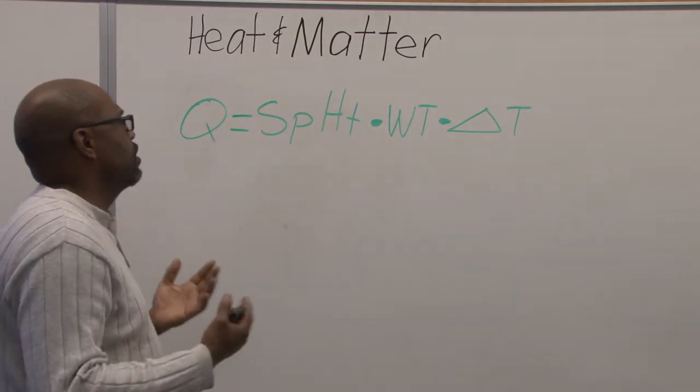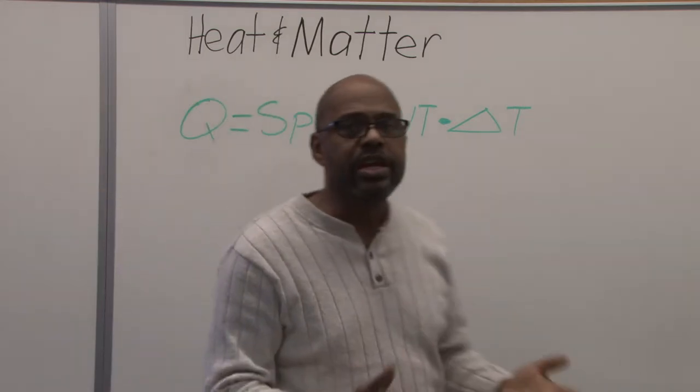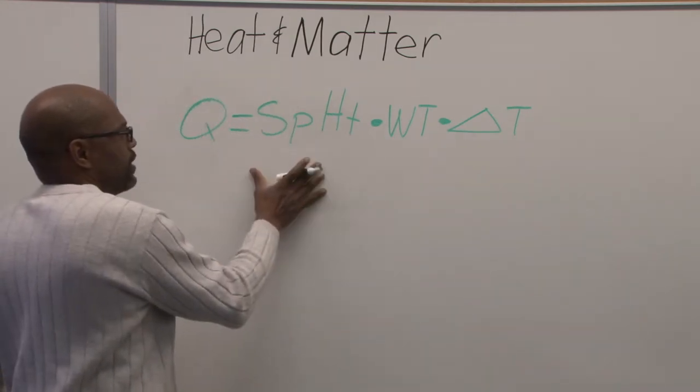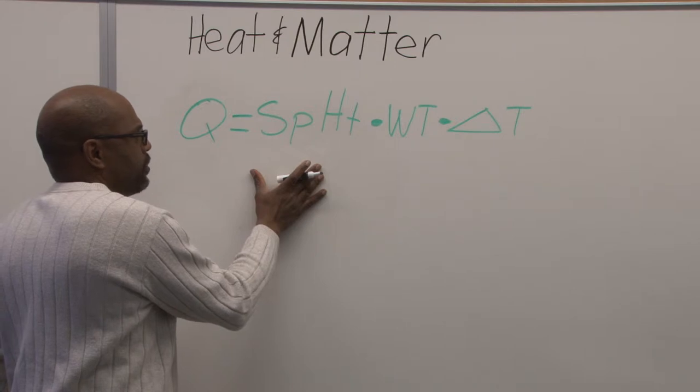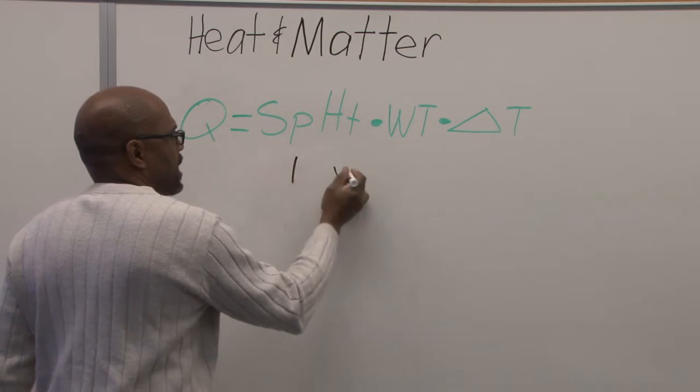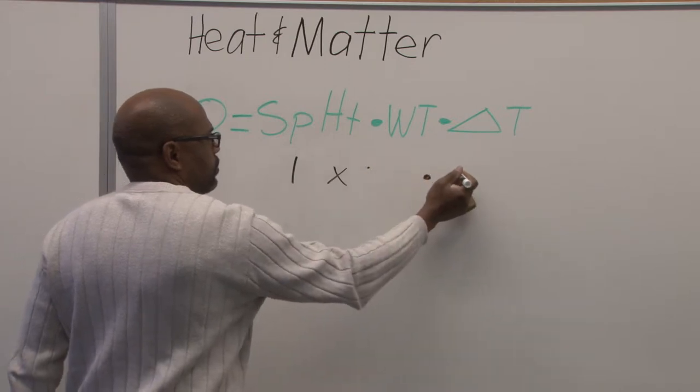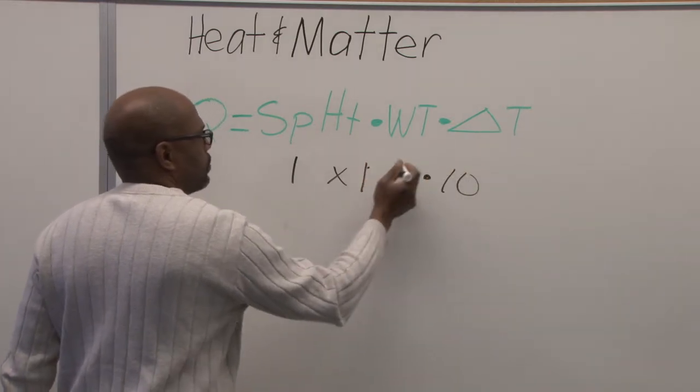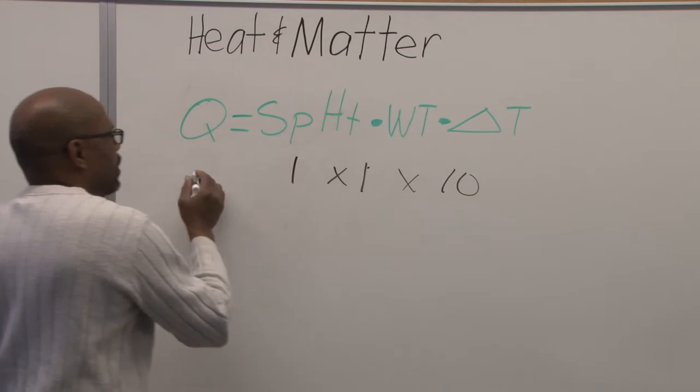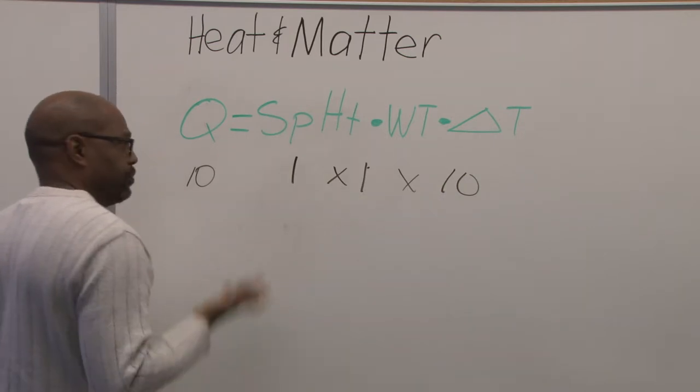So if we look at a substance and we want to measure it, it's very simple. We can take it and look at it and determine how much heat it would take. So if we look at, let's say, water, and we wanted to raise it ten degrees, and we had ten pounds of it. So the specific heat is one times ten degrees, and it's one pound. So it would take one times one times ten. So it would take ten BTUs to raise one pound of water ten degrees. Very simple.